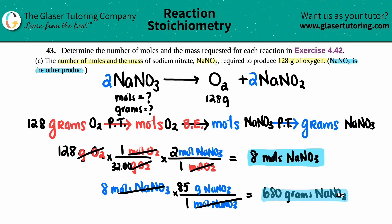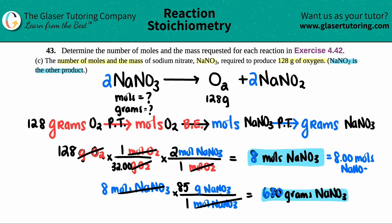Before finishing, if your teacher cares about significant figures, the answers should have the same number of sig figs as the given value. The beginning value has three sig figs, so technically it's 8.00 moles of NaNO3. For 680 grams, the trailing zero doesn't count unless you include a decimal point, so you'd write 6.80×10² grams to show three sig figs.